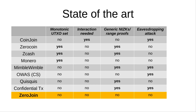ZeroCoin is one of them, and Monero is also one of them. Monero is a very popular privacy protocol but it has the issue of a monotonic UTXO set. I am considering a basic variant of Monero here, because Monero has evolved over the years. The current version of Monero also uses range proofs and generic non-interactive zero knowledge proofs, so the third column would be yes in the latest version. The monotonic UTXO set is not scalable because memory requirements keep increasing as the blockchain grows.